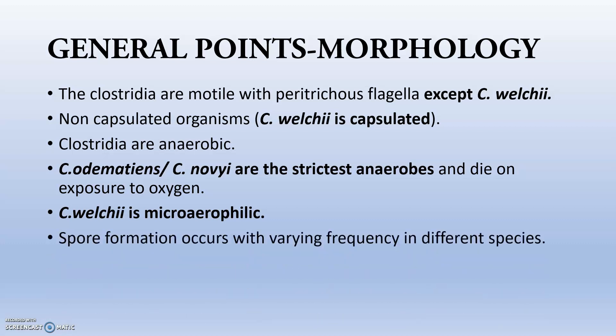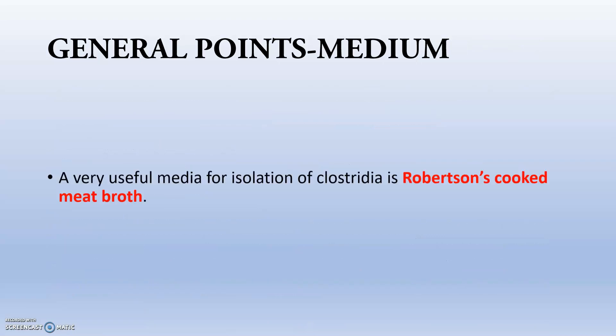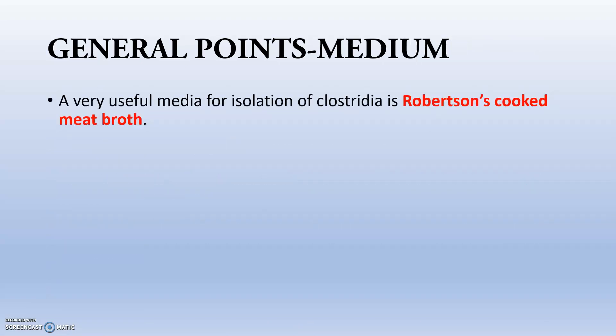Spore formation occurs with varying frequency in different species, and the shape and position of spores also vary by species. Spores usually bulge the organisms. A very useful medium for the isolation of Clostridia is Robertson's cooked meat broth, abbreviated as RCMB. This question has been asked in many IZR examinations, so be vigilant with this point.